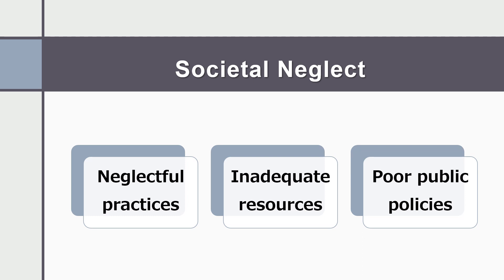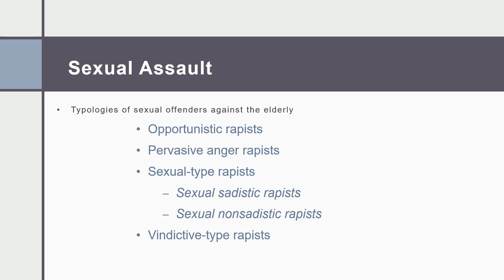Looking at the big picture, really since 2010 and the elder justice initiatives, there hasn't been much new legislation to curtail elder abuse. Regarding offender typologies for sexual offenders against the elderly, please make sure you read this section — there is a lot of great information. These typologies correlate with what we know about sexual abuse offenders generally. Opportunistic rapists simply have the opportunity to sexually abuse and don't target based on gender.